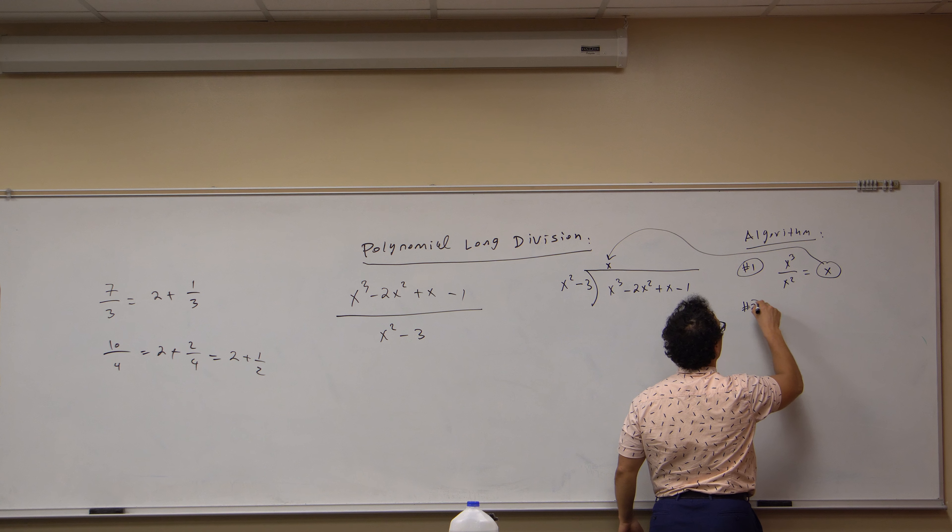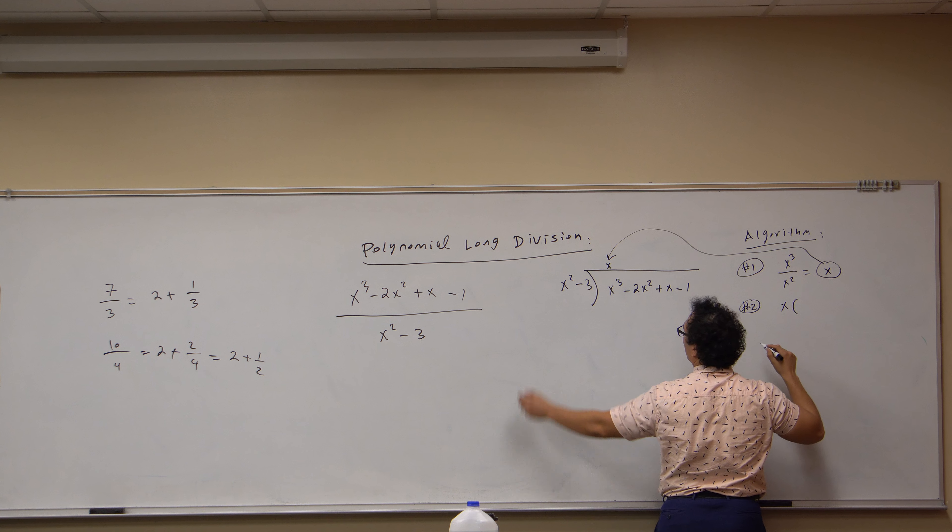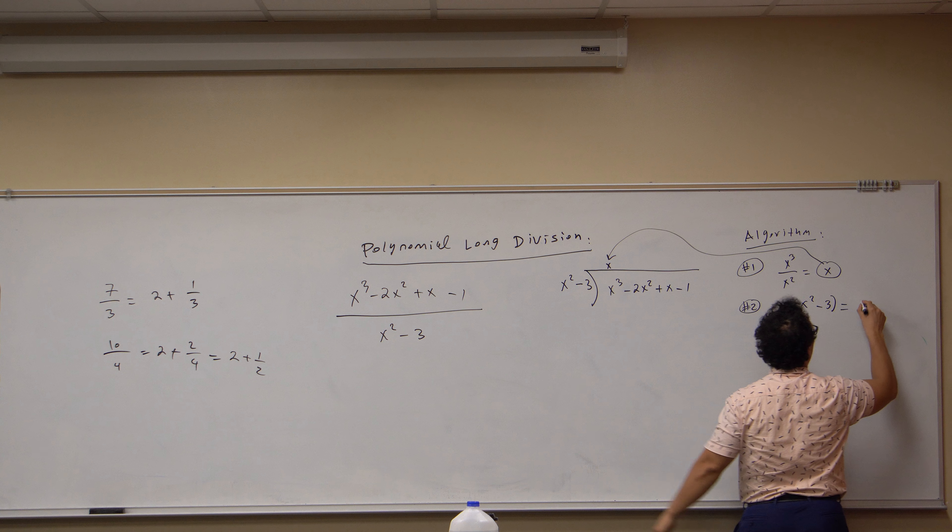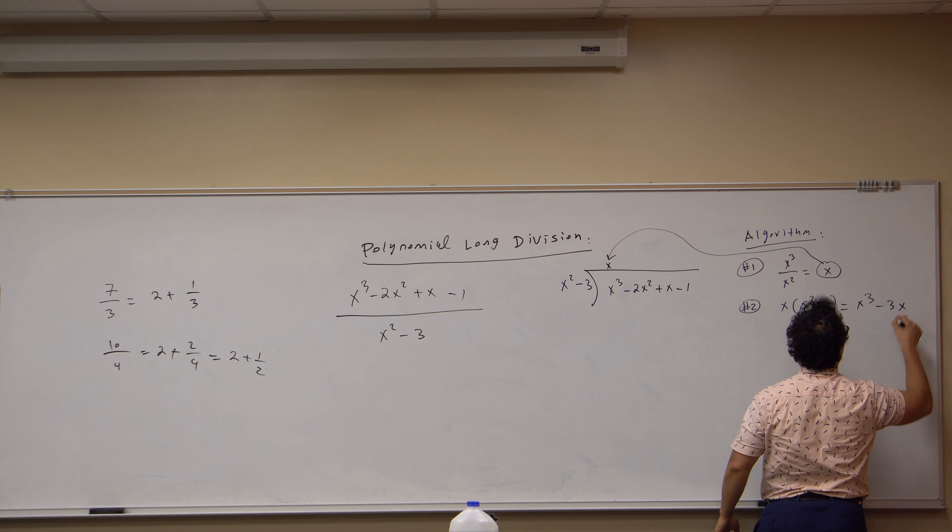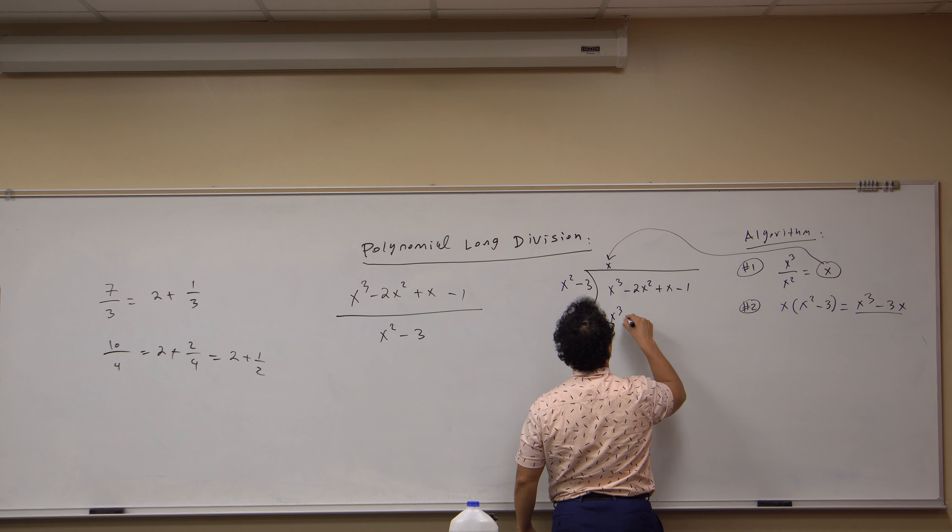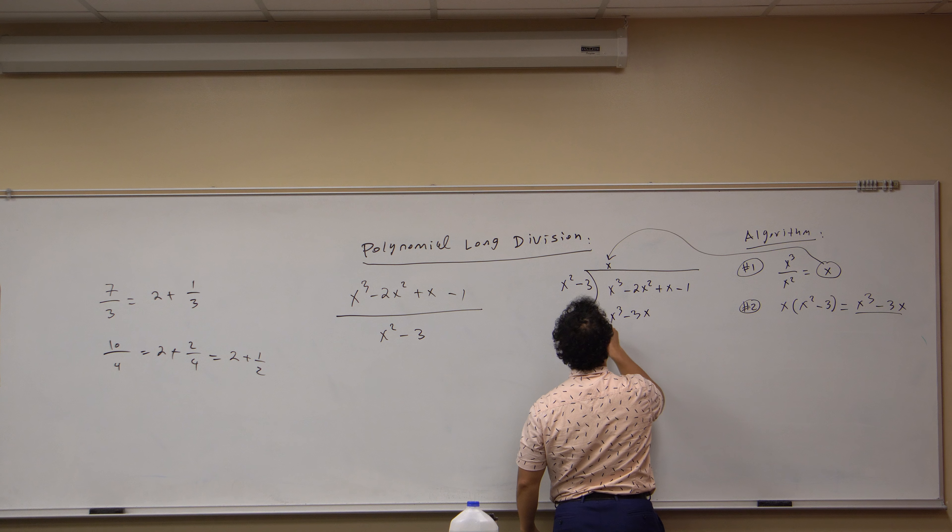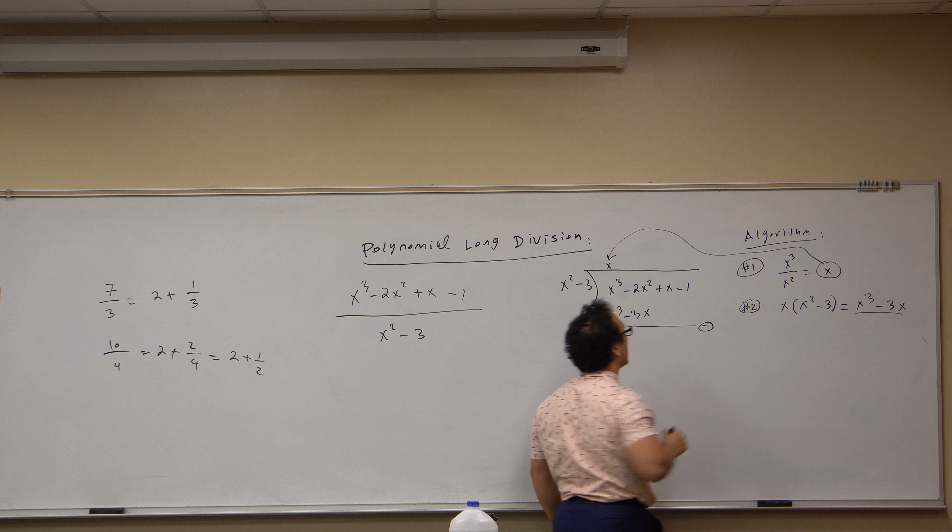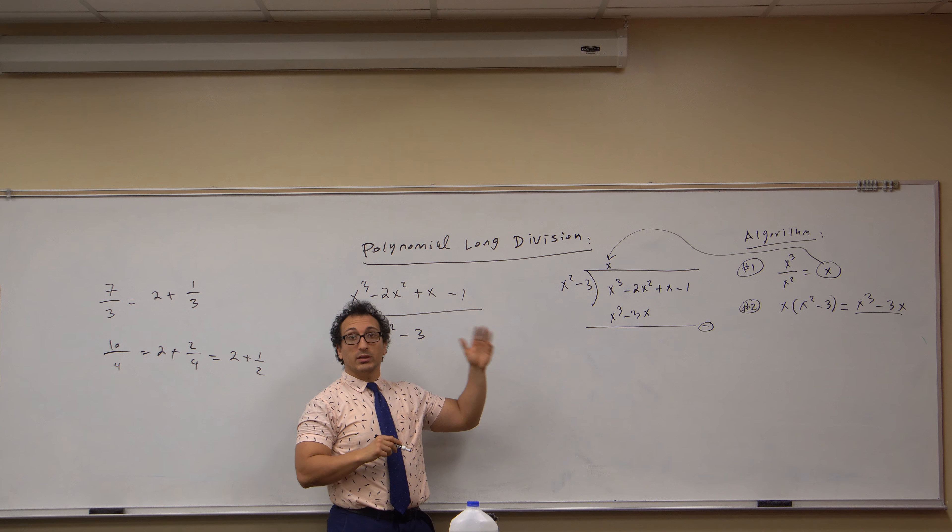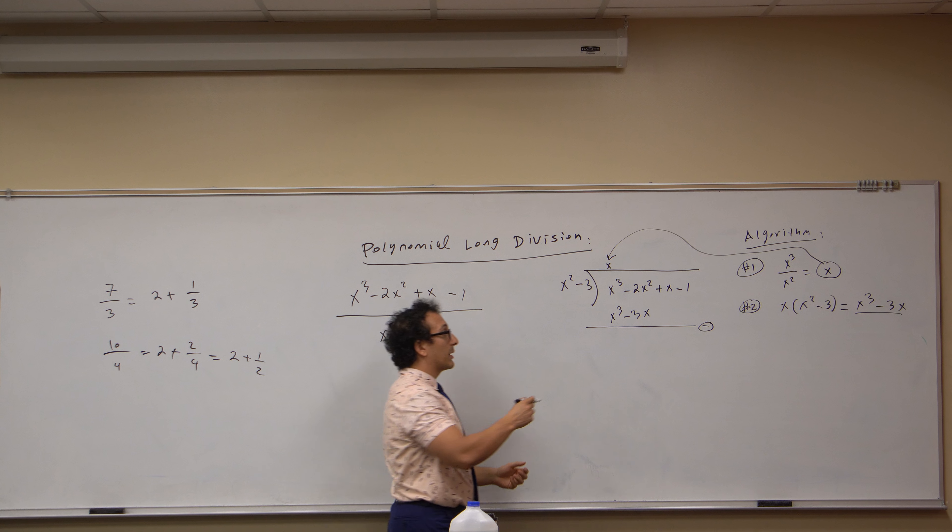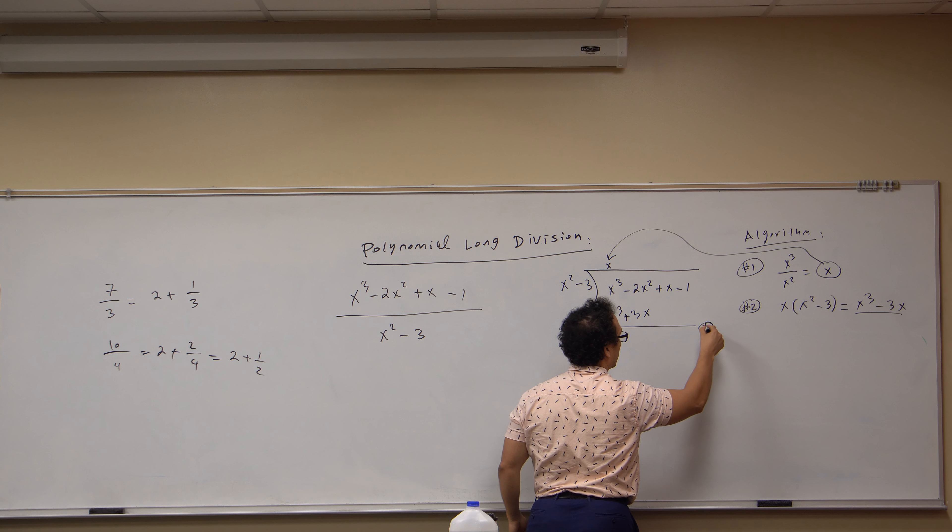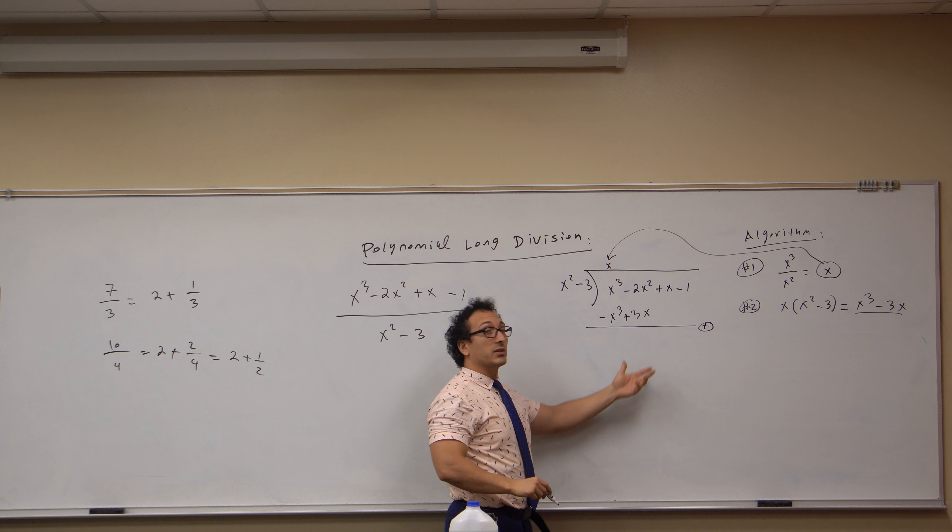Then here's step two. Get that value, x, and multiply it by what's out here. Then I get x cubed minus three x. Then this comes down here, x cubed minus three x, and we put a subtraction bar. The subtraction bar can be converted, which I like to do, into an addition bar by distributing a negative to these terms.